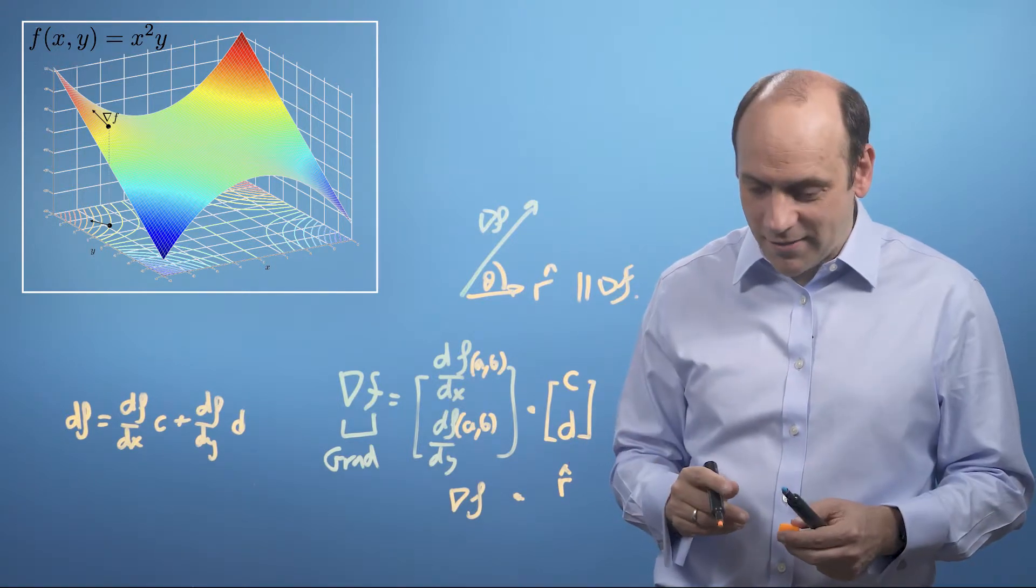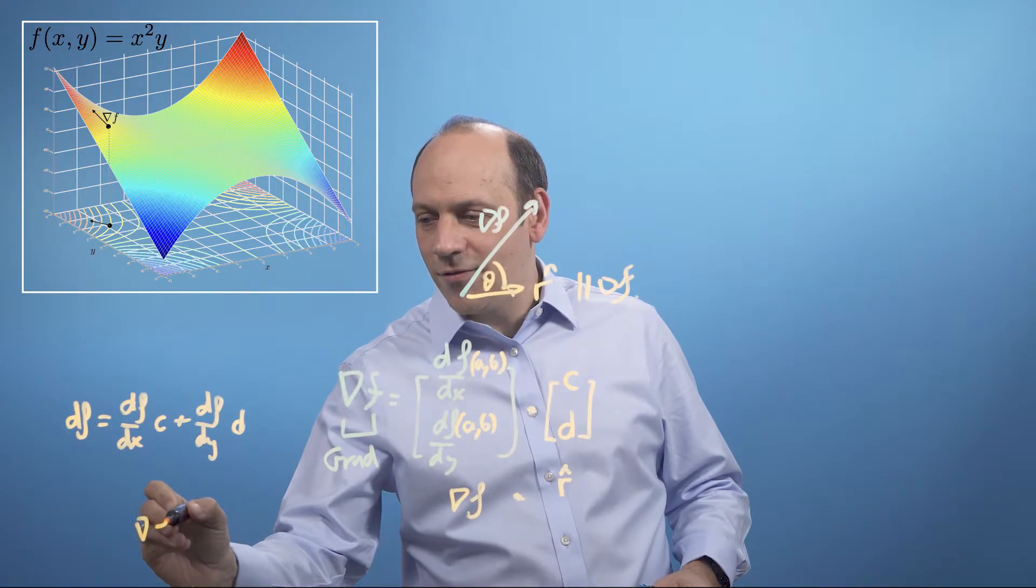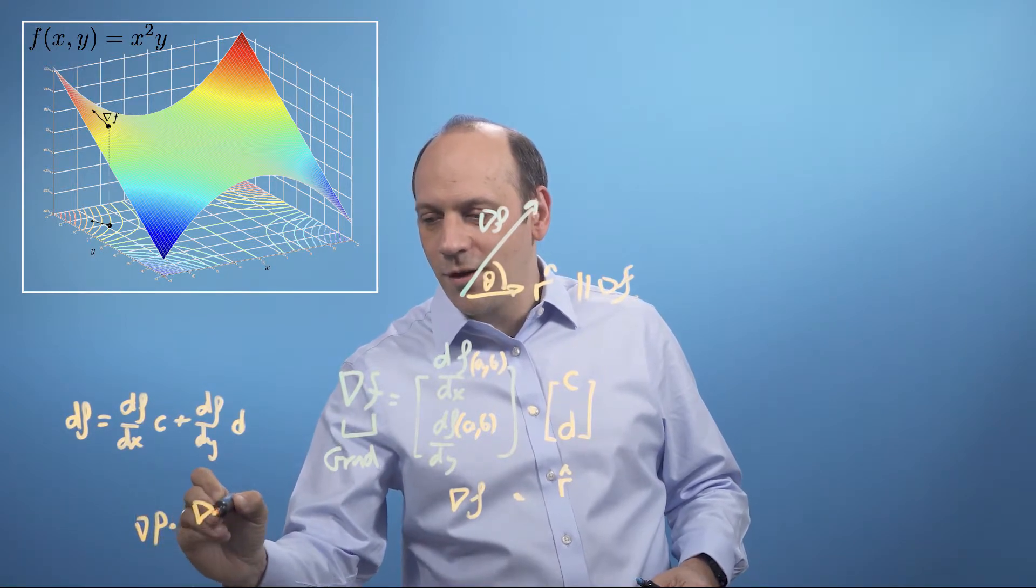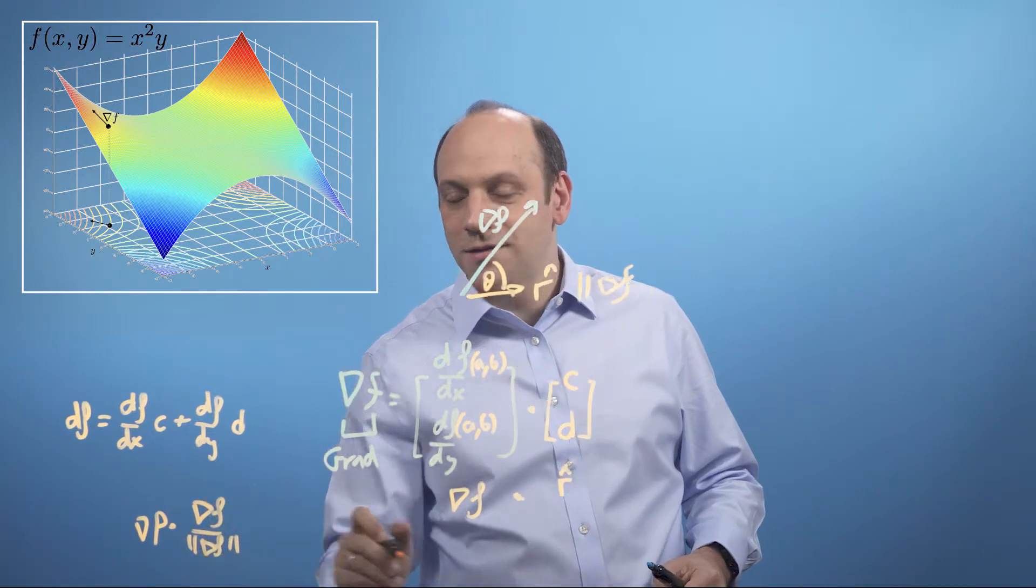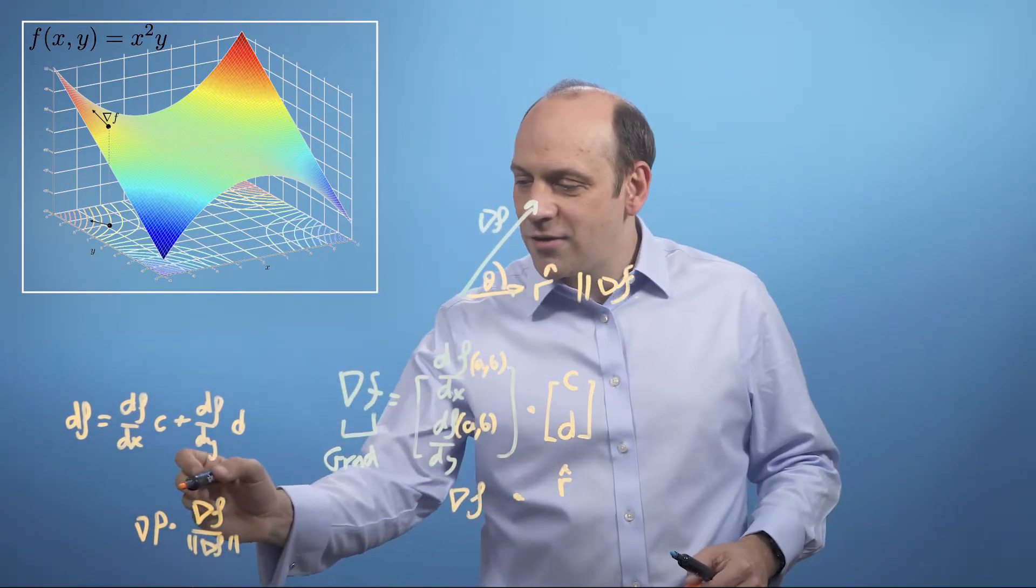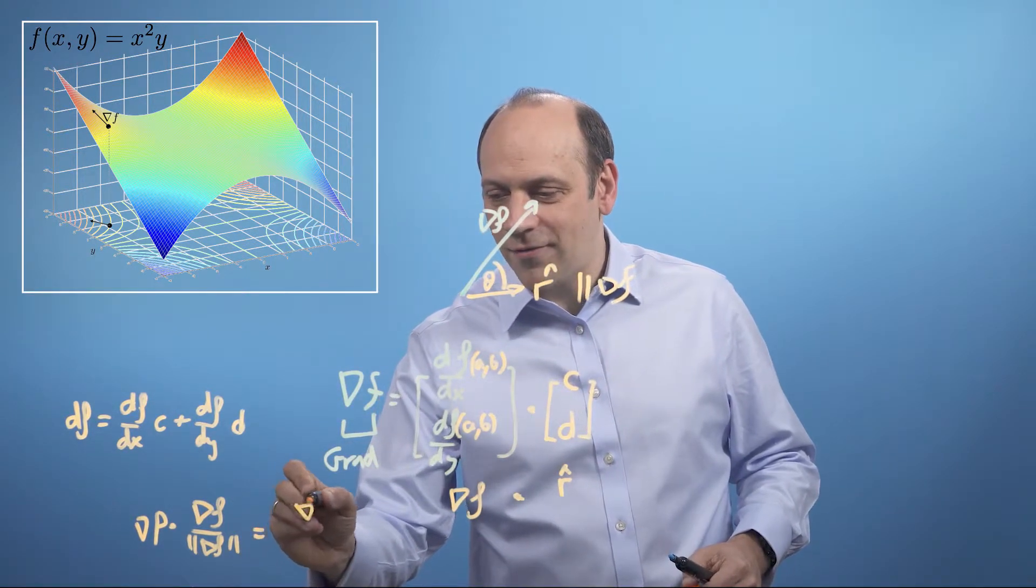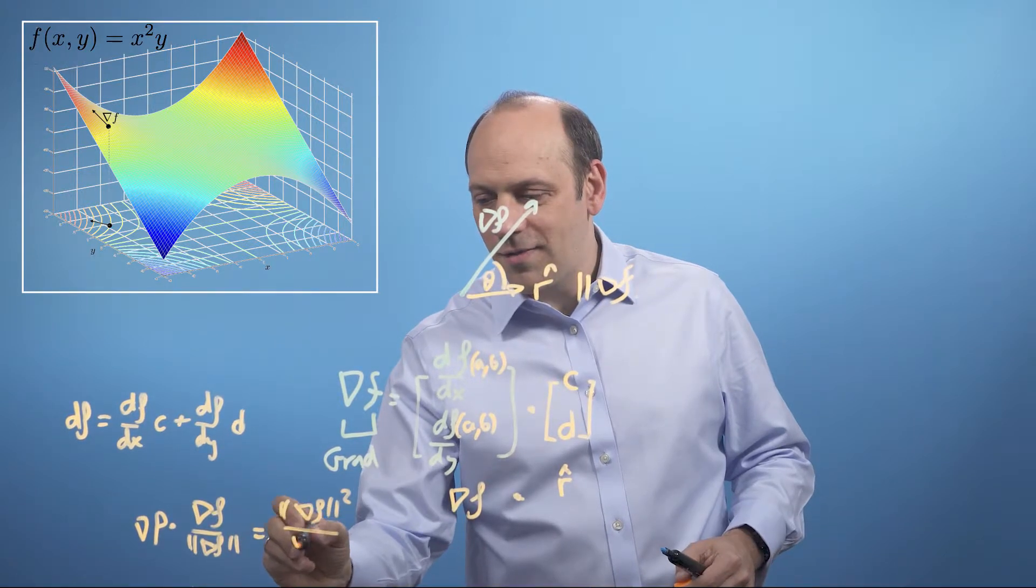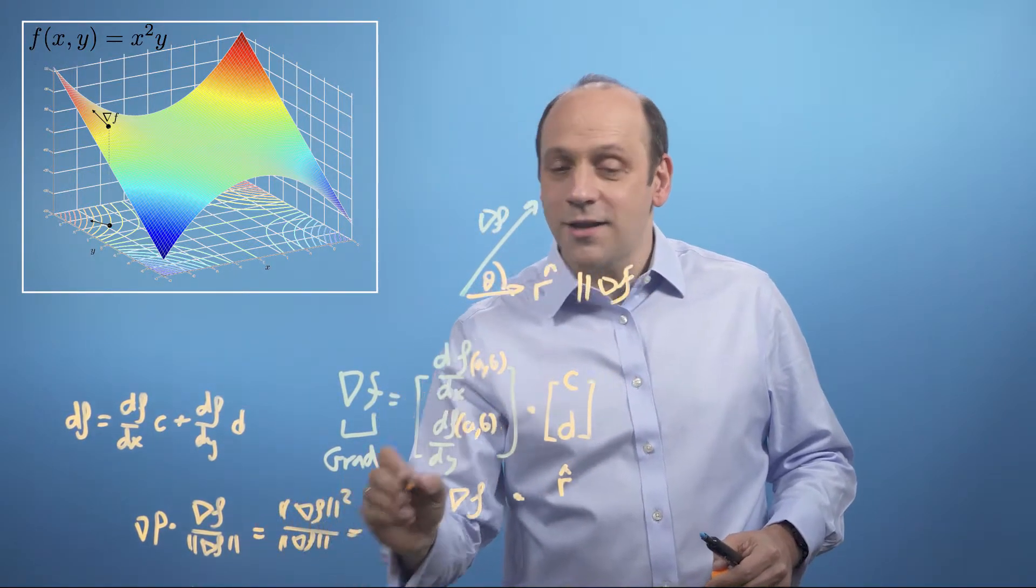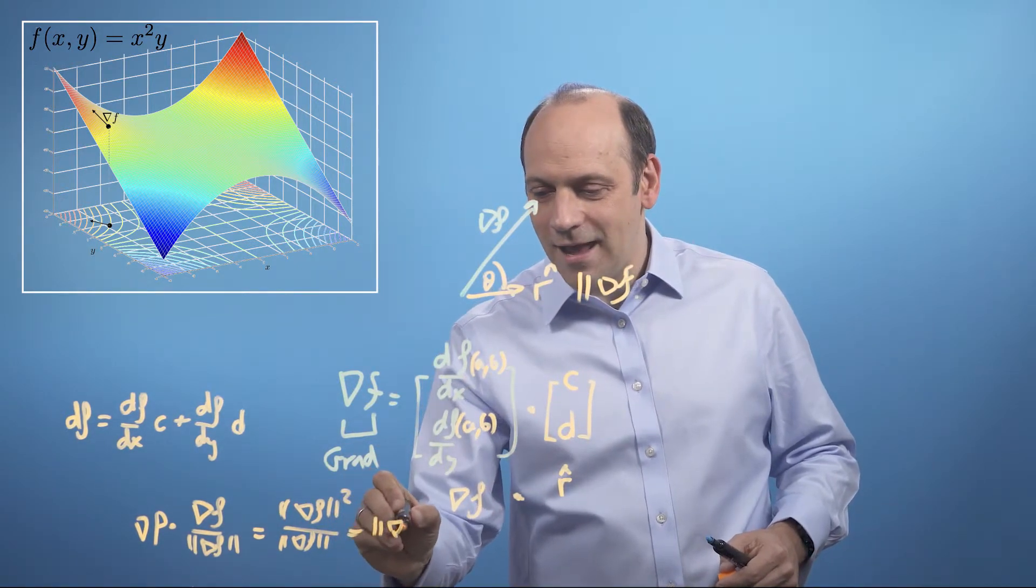So we can write that down, we can do that calculation. So we'll have grad f dotted with the normalized version of itself, grad f divided by its modulus. But grad f dotted with itself is just equal to the size of grad f squared. We've got to divide by the size.